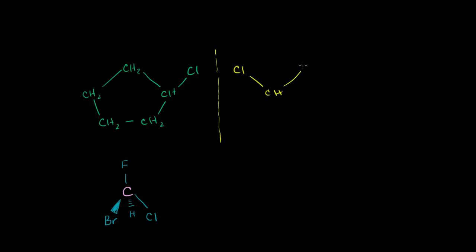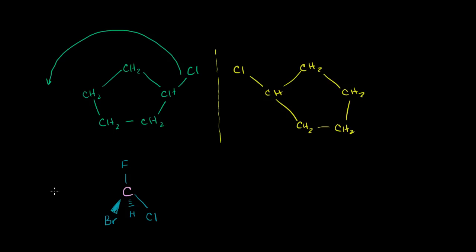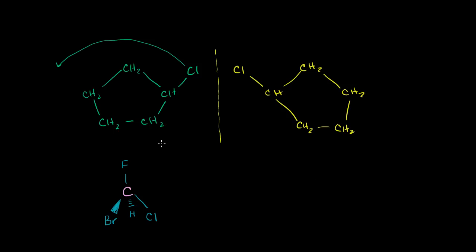Its mirror image would look like this: you have a chlorine, then a CH, CH2, CH2, and you complete the cyclopentane. Now, is there any way to rotate this to get the mirror image to match? If you just rotate this molecule about 180 degrees, what would it look like? It would look a little bit different — let me draw it out.